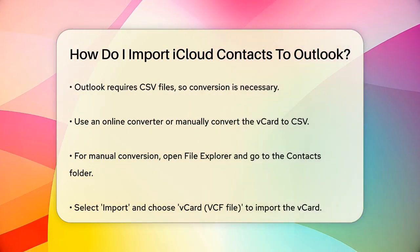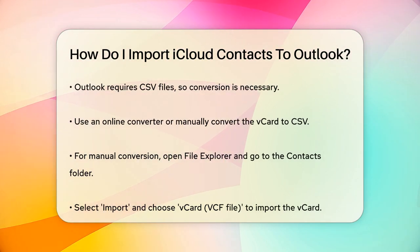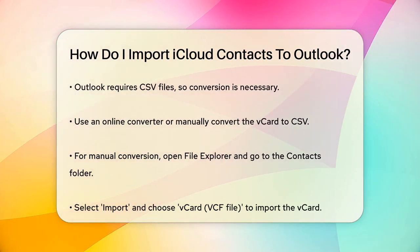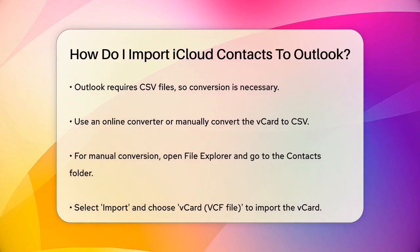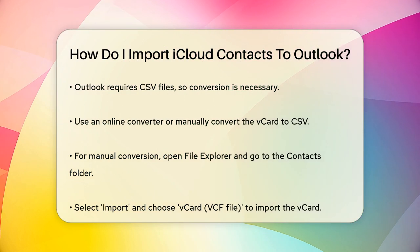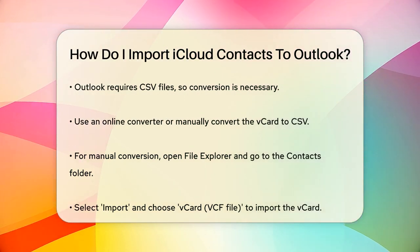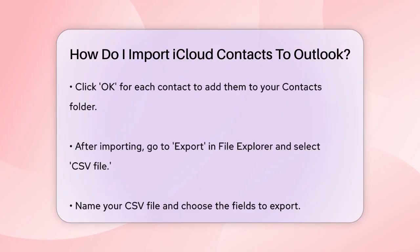For the manual route, open File Explorer on your PC, go to your contacts folder, and choose Import. Select vCard VCF file, and import the vCard file you downloaded from iCloud. For each contact, you'll need to click OK to add it to the contacts folder. Once you've added all your contacts, go back to the top of the File Explorer page and choose Export. Select CSV file and export your contacts. You'll need to name your CSV file and choose the fields you want to export.